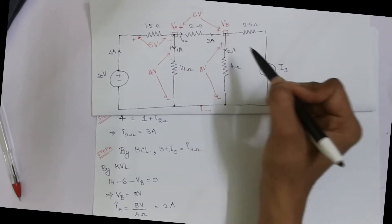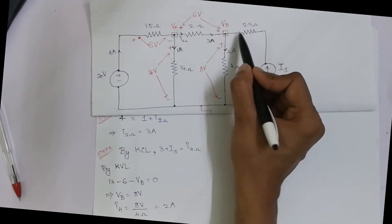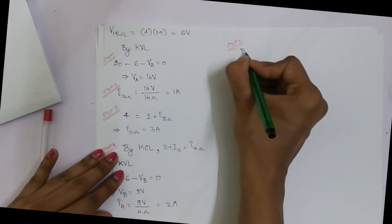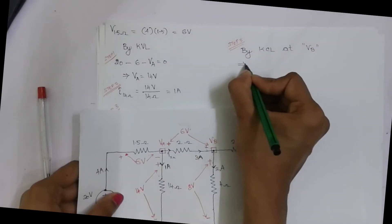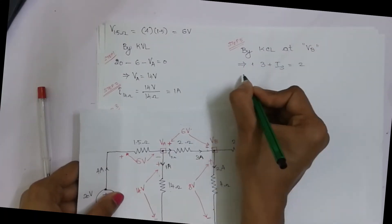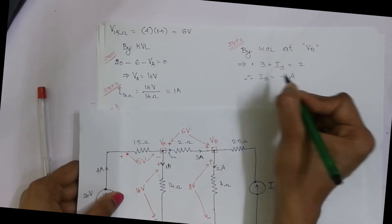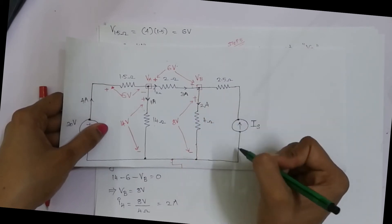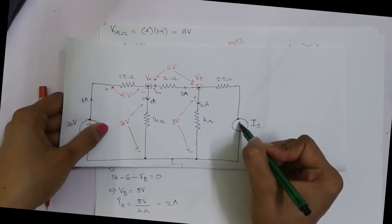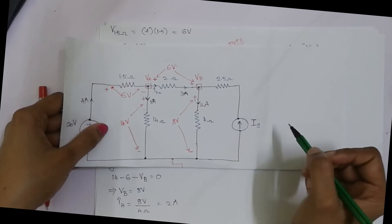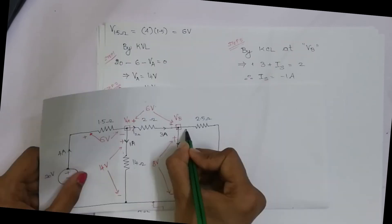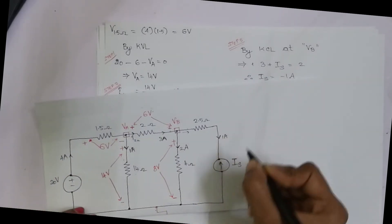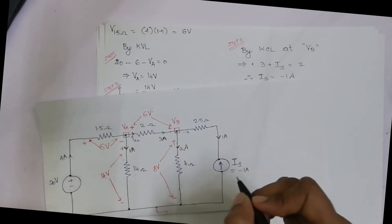3 amperes is traveling in this direction. So what is IS? IS plus 3 amperes should equal 2 amperes. Therefore IS = minus 1 ampere. In other words, the current is actually flowing in the downward direction, which is opposite to the assumed direction. So IS = −1 ampere, meaning 1 ampere is flowing in the opposite direction. IS = −1 and 1 ampere flowing in reverse are equivalent statements.